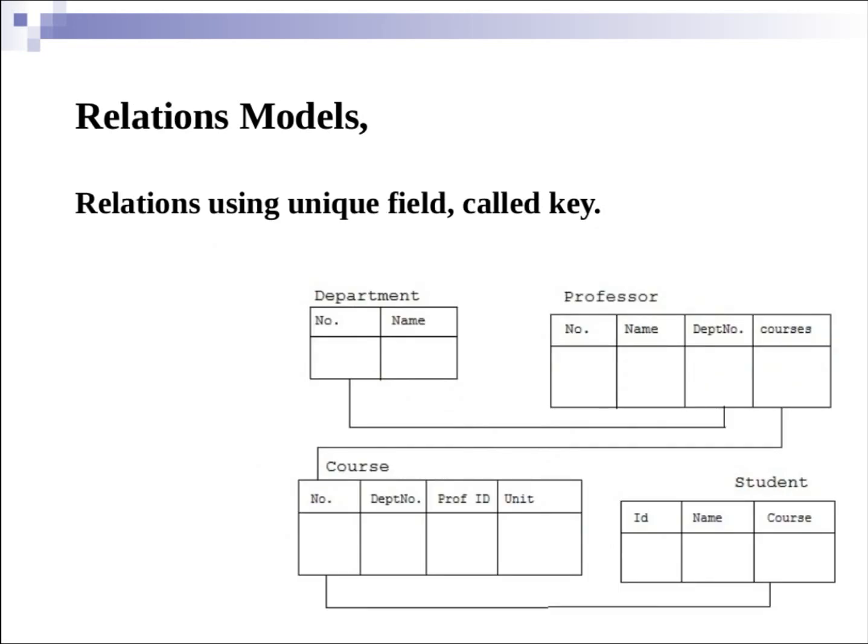Relational model was first formulated and proposed in 1969 by Edgar F. Codd. A database organized in relational model is called a relational database. On relational model, each relation uses a unique field called a key.